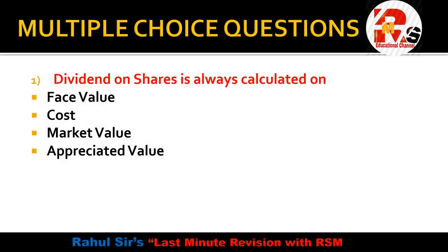Let's start today's session, Part 3 of Financial Accounting MCQs. Question 1: Dividend on shares is always calculated on — face value, cost, market value, or appreciated value? Dividend on shares, or interest on debentures, is always calculated on nominal value, which means face value. So the right answer is face value.